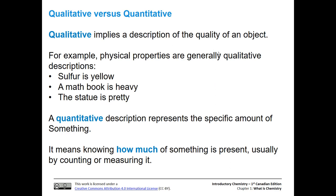So what about qualitative versus quantitative? So we can have qualitative experiments, and we can have quantitative ones. And qualitative is essentially a description of the quality of an object. So, for instance, if we say that sulfur is yellow, we're looking at the color with our eyes. And that's a qualitative description.